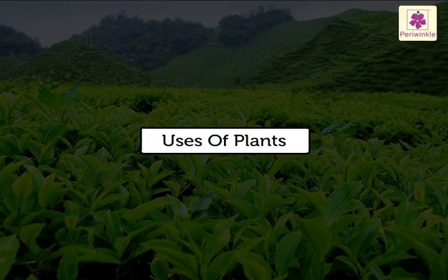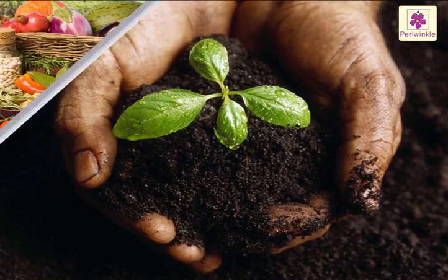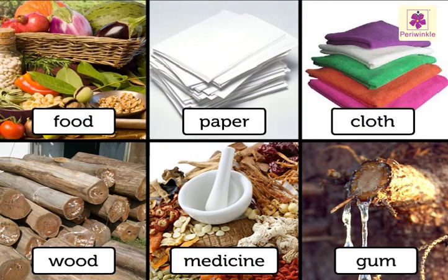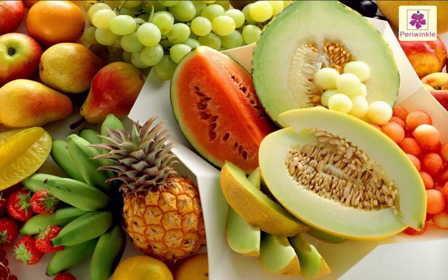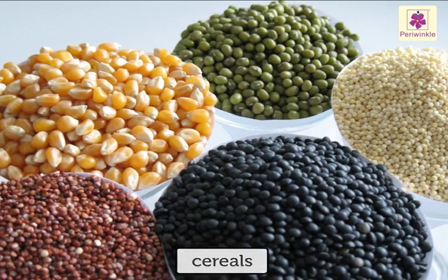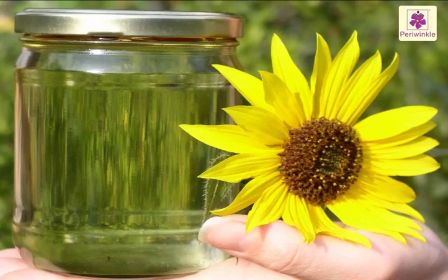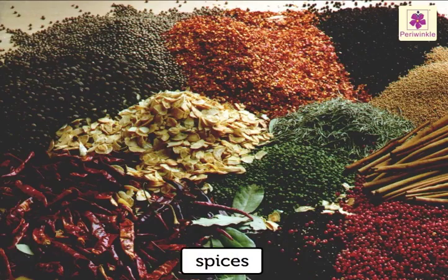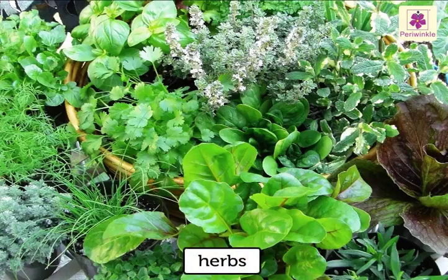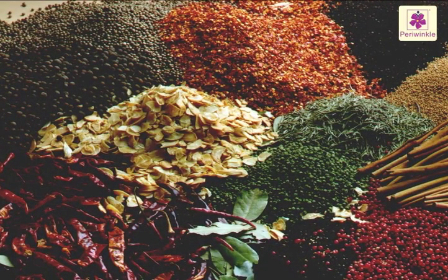Uses of Plants. Plants are our best friends. They give us everything we need. They provide us with fruits, vegetables, cereals, pulses, oil, spices and herbs. Herbs add flavour to the food just like spices. They are good for health.